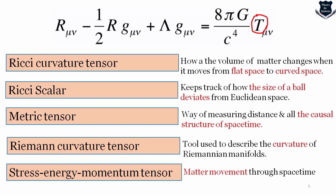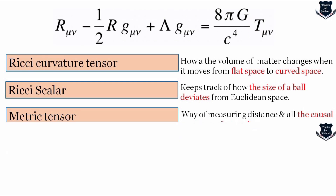This comprises the entire Einstein field equations: the Ricci curvature, Ricci scalar, metric tensor, Riemann curvature tensor, and stress-energy momentum tensor. The lambda, 8 pi G, and c to the power 4 are constants — the cosmological constant, gravitational constant, and the speed of light raised to the power 4 to keep dimensional analysis intact.